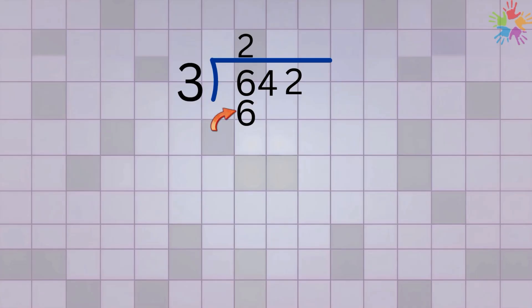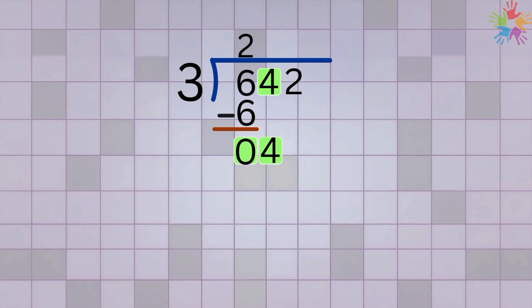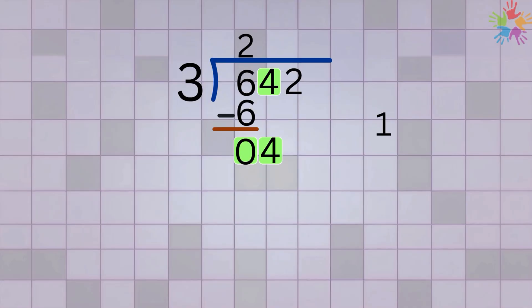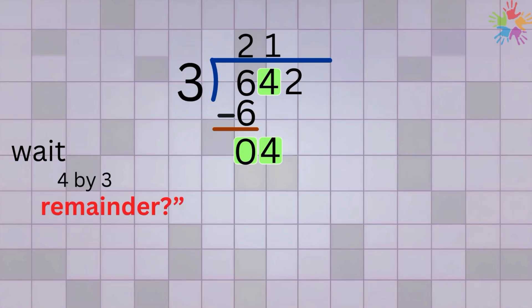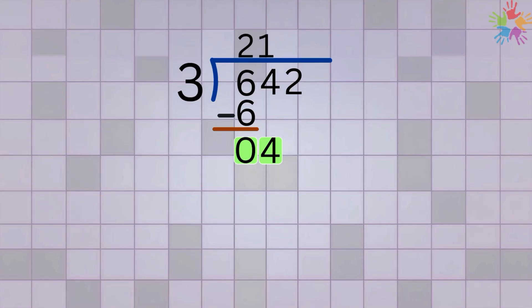Next we subtract: 6 minus 6 equals zero. Since there are still other numbers, we bring down the next digit, 4, to team up with the zero — now we're working with 4. We ask: how many times does 3 go into 4? Just once, so we place 1 on top. Then we multiply: 1 times 3 equals 3. Subtract: 4 minus 3 equals 1.